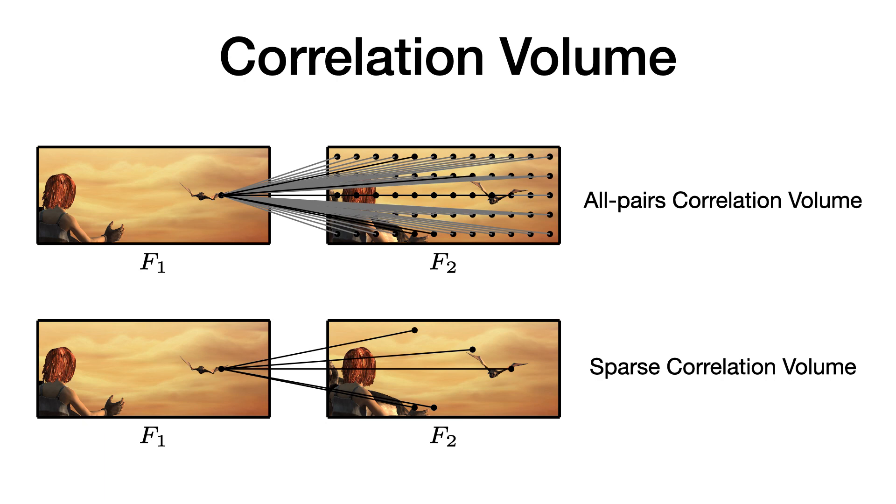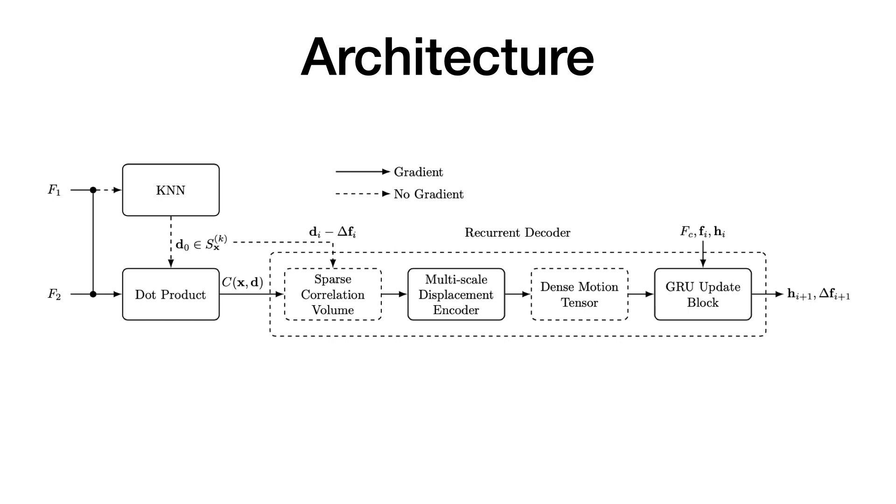We also construct and process correlation volumes at quarter resolution as opposed to 8th resolution in RAFT. To construct a sparse correlation volume, or SCV, we use the KNN algorithm to select top k correlations, and then compute dot product with the k selected feature vectors.